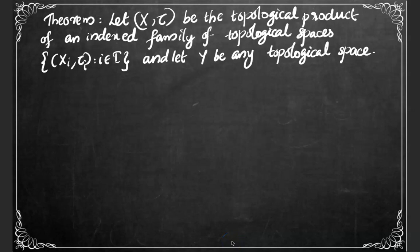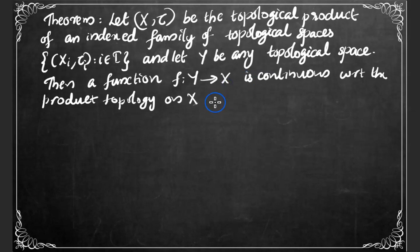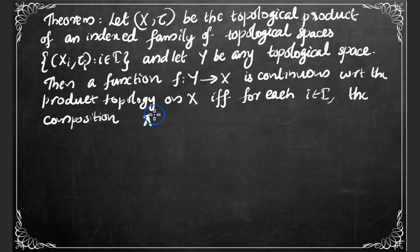Theorem: Let X be the topological product of an indexed family of topological spaces Xᵢ, for i element of the index set I, and let Y be any topological space. Then a function f from Y to X is continuous with respect to the product topology on X if and only if for each i element of I, the composition πᵢ∘f defined from Y to Xᵢ is continuous.